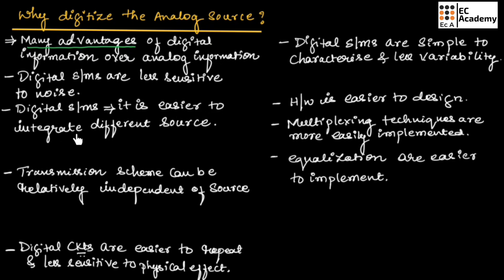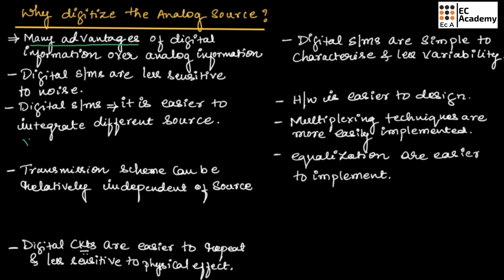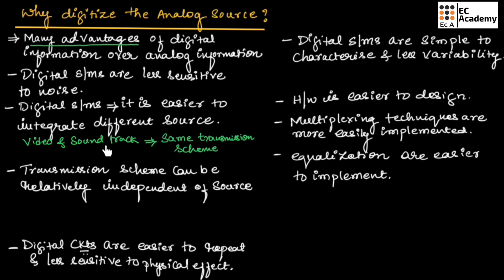In digital systems, it is easier to integrate different sources. For example, video and its corresponding soundtrack can share the same transmission scheme. So, we can have two different sources and integrate them, transmitting over a single transmission scheme.